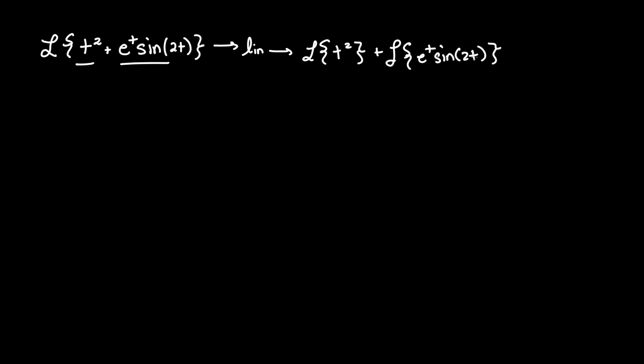And you can't separate the e to the t and sine of 2t, since they're two independent variables being multiplied by each other. So let's evaluate the first term, t squared.